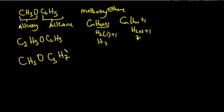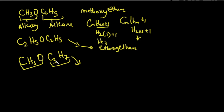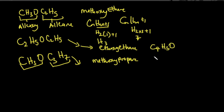The original compound is ethoxy ethane. The new compound has the longer chain as propane, and the shorter alkyl group attached to oxygen is named together as methoxy — giving methoxy propane. To verify they are isomers: ethoxy ethane has 4 carbons, 10 hydrogens, and 1 oxygen. Methoxy propane also has 4 carbons, 10 hydrogens, and 1 oxygen.